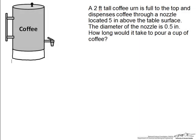This screencast will solve the following problem that is related to using the Bernoulli equation. We have a two foot tall coffee urn that is full to the top and dispenses coffee through a nozzle that is located five inches above the table surface. The diameter of this nozzle is approximately half an inch and we want to know how long it would take to pour a cup of coffee.